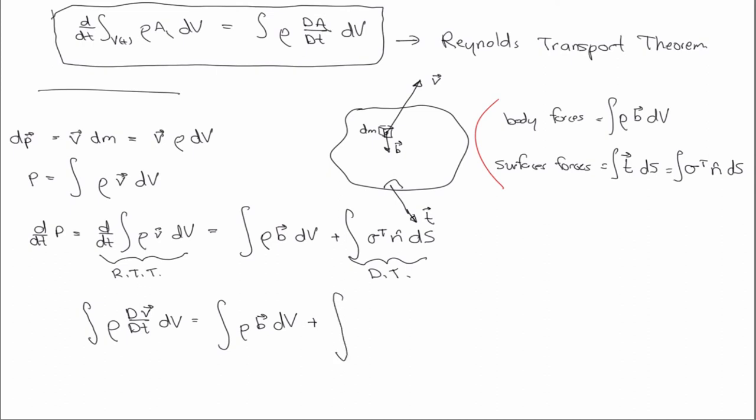And then in the divergence theorem, we'll have that divergence of the transpose of the stress tensor is equal to dv. And so if we group the right-hand side, then we have rho b plus divergence of sigma transpose dv. And again, for arbitrary dv, the integrands have to be equal.